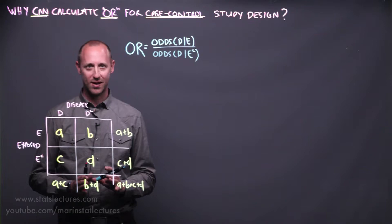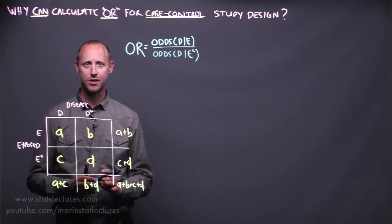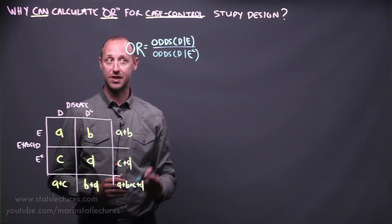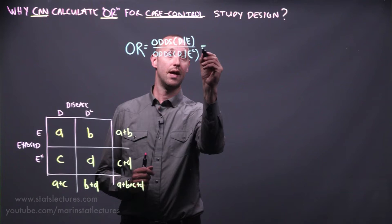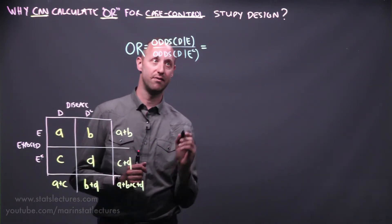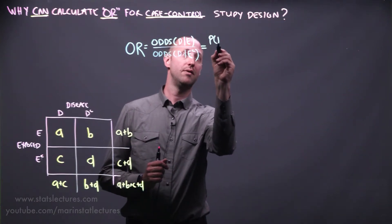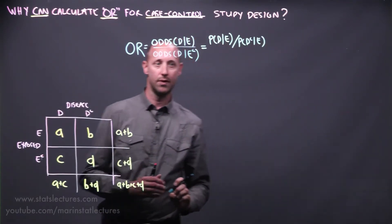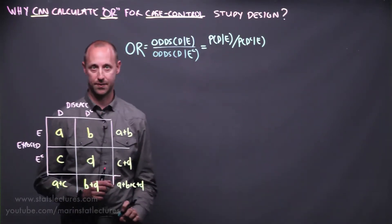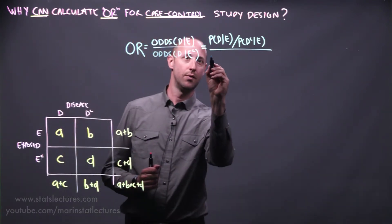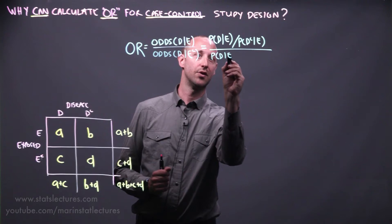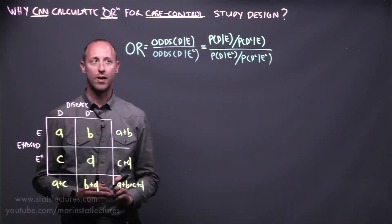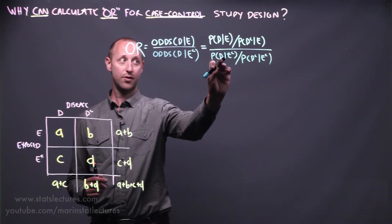I'm generally not a big fan of using the ABCDs to work out odds ratios, but we're going to present it this way for the sake of working through the calculations. The odds ratio is the odds of disease given exposed over the odds of disease given they're not exposed. The odds of disease given exposed can be written as the probability of having the disease given they're exposed divided by the probability of not having the disease given they're exposed. Odds are a ratio of occurrences to not occurrences.